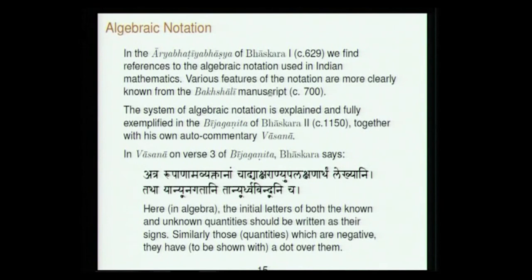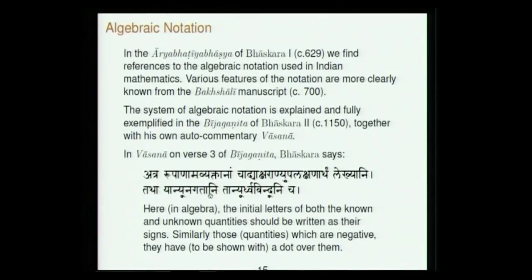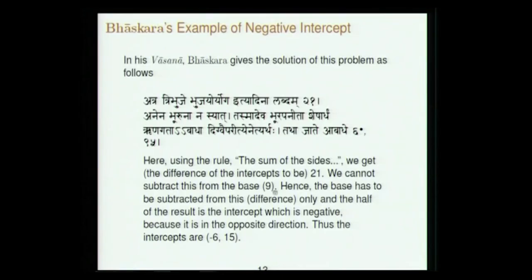The development of algebraic notation is also notable. One of the best indicators is in the Bhakshali manuscript. In the Aryabhatiya Bhashya of Bhaskara, we find references to algebraic notation. Bhaskara writes that the first letters of unknown quantities should be written to denote them — rupanam abhyaktanam cha adhyaksharani upalakshanartham lekhyani — and that a dot above a quantity denotes it as negative.